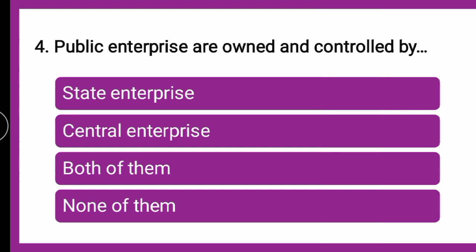Next question: Public enterprises are owned and controlled by DASH — whether by state government, central government, both of them, or none of them. The correct answer is both of them. State government and central government both control the public enterprises — owned and controlled by them.